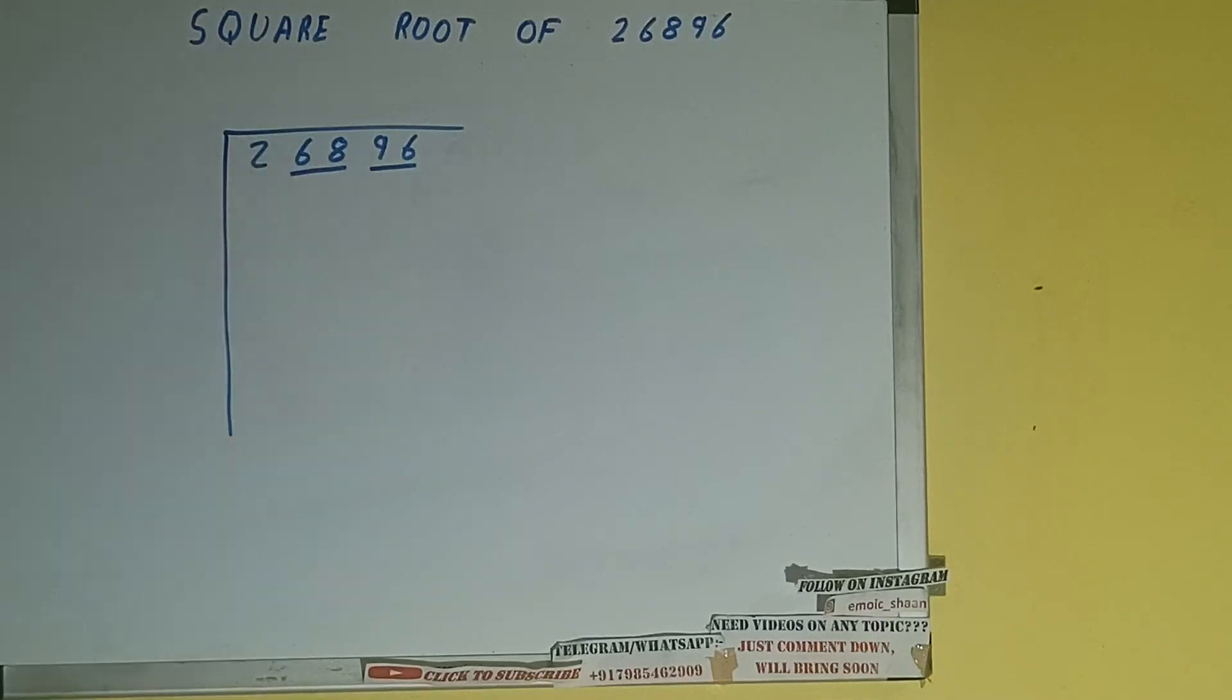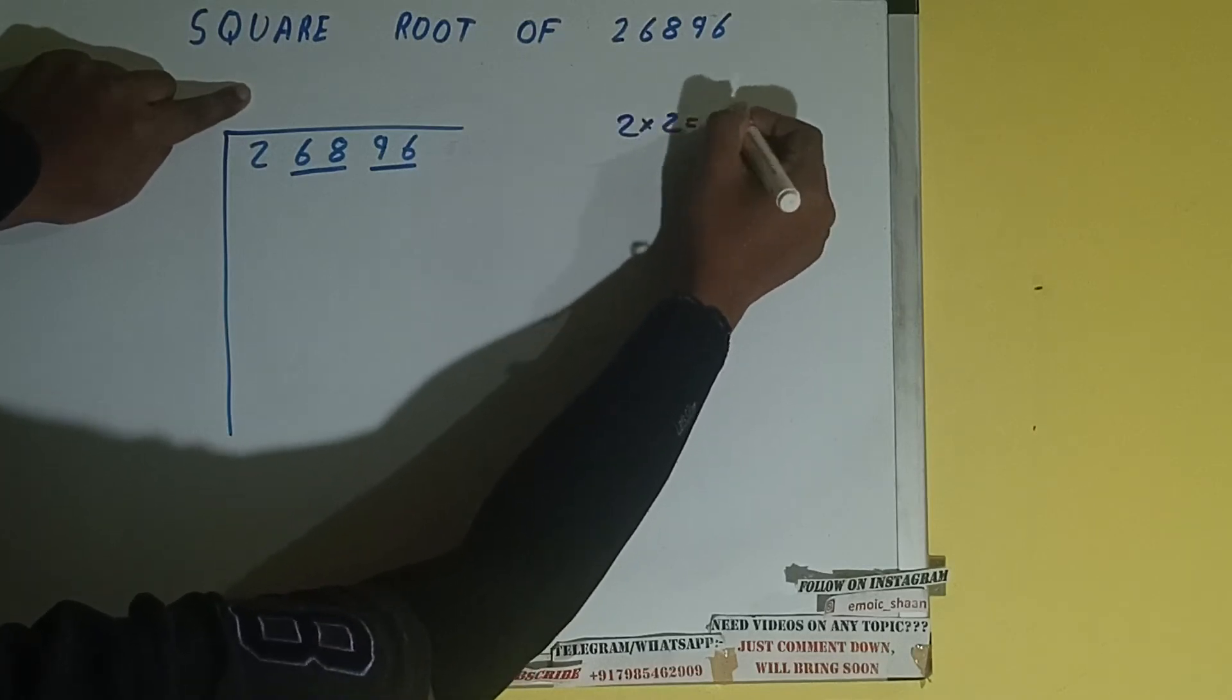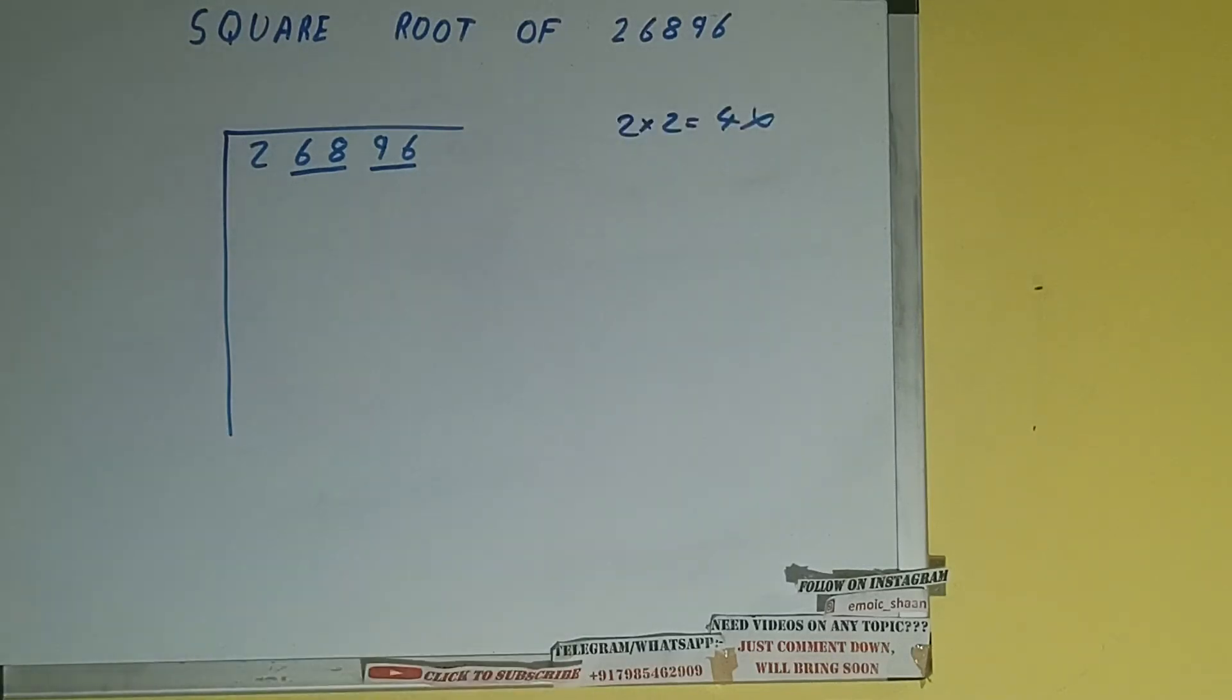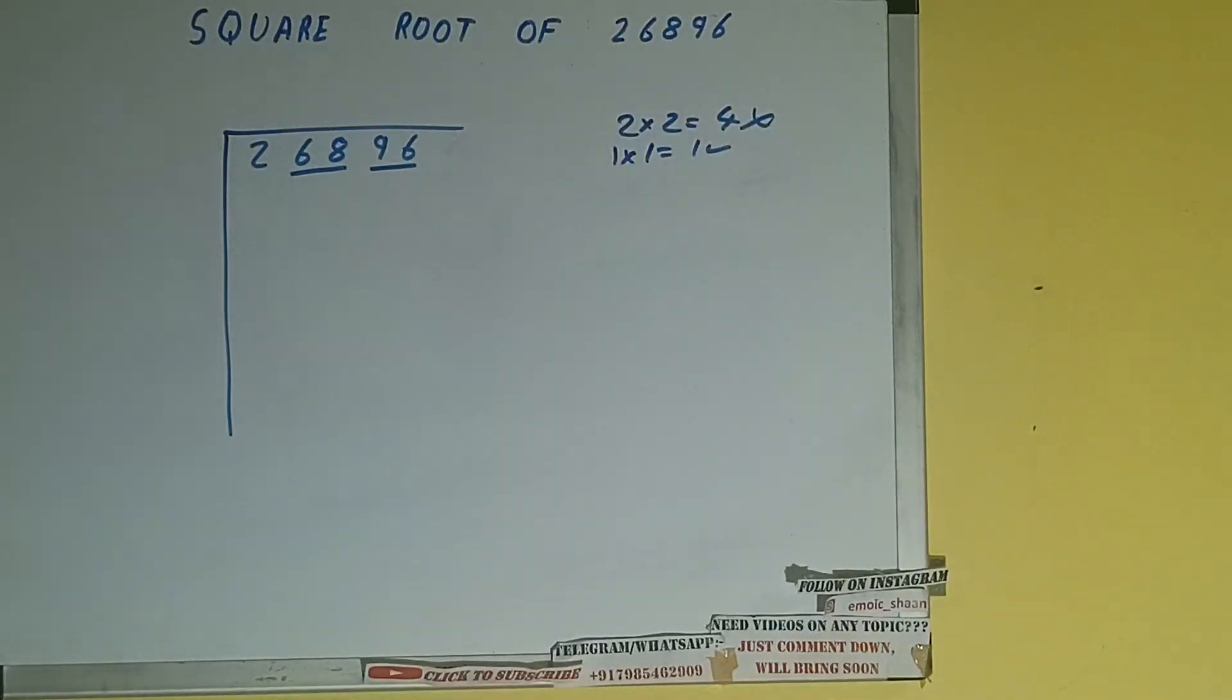The rule is whatever number we write here, we need to write here also. So if we write 2 here and 2 here, it will be 4, which is greater than 2, so we cannot take it. If we write 1 here and 1 here, it will be 1, which is good to take.